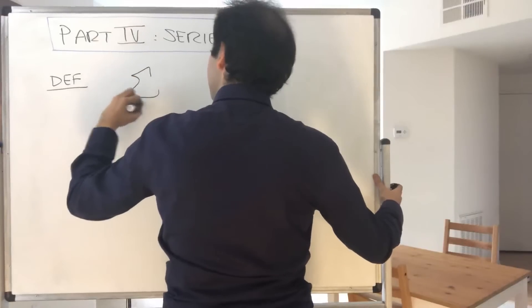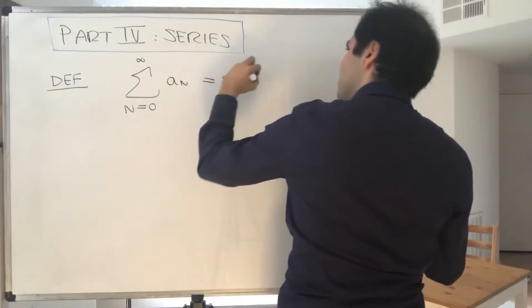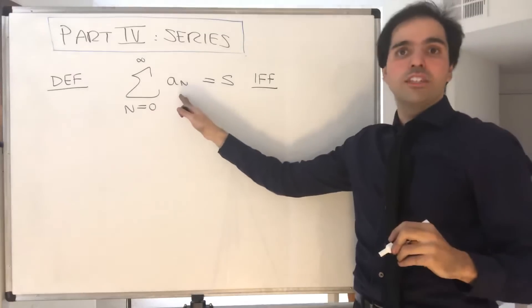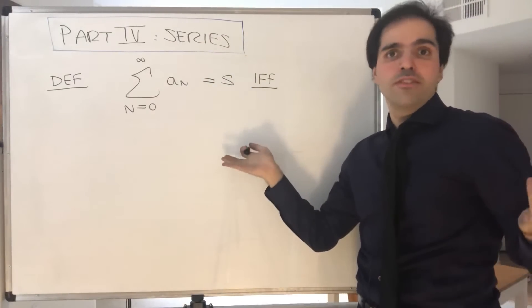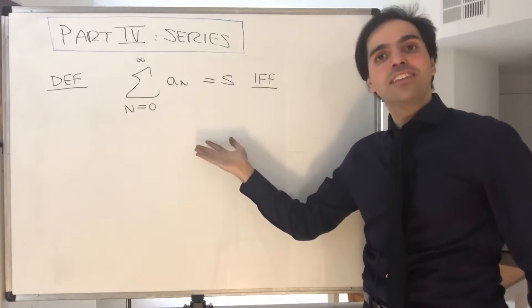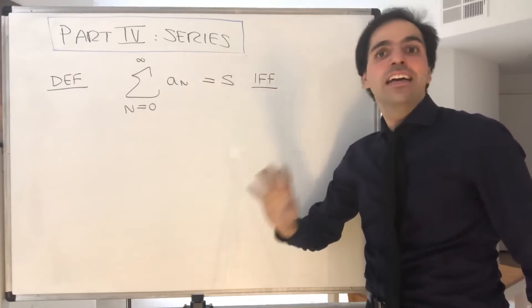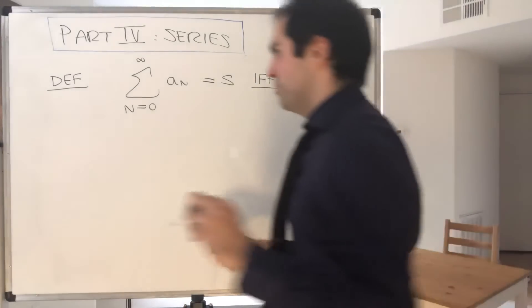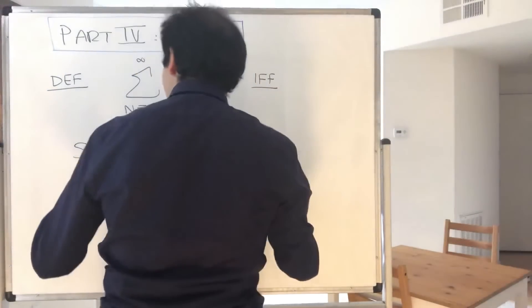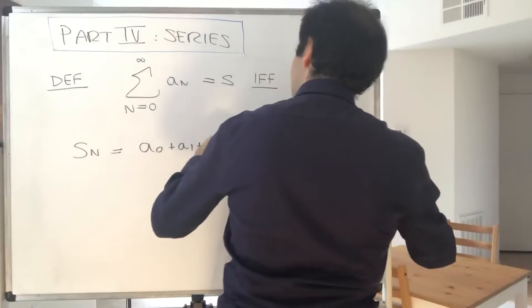In other words, the series sum from n=0 to infinity of a_n equals S, if and only if what happens? So the problem is this is a series. We don't know limits of series, but we do know limits of sequences. So it would be nice if we could associate a sequence to this series, and we can, using what are called partial sums. So, this series converges if and only if the sequence a_0 + a_1 + ... + a_n, which is just a sum from k=0 to n of a_k.